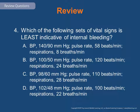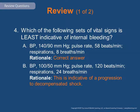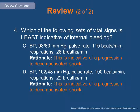Review question 4: Which set of vital signs is least indicative of internal bleeding — BP 140/90, pulse 58, respirations 8; BP 100/50, pulse 120, respirations 24; BP 98/60, pulse 160, respirations 28; or BP 102/48, pulse 100, respirations 22? The answer is A. Internal hemorrhage typically reveals vital signs consistent with shock: hypotension, tachycardia, and tachypnea. Hypertension, bradycardia, and bradypnea — a slow respiratory rate — are consistent with a closed head injury, not internal bleeding. Options B, C, and D are all indicative of progression to decompensated shock.